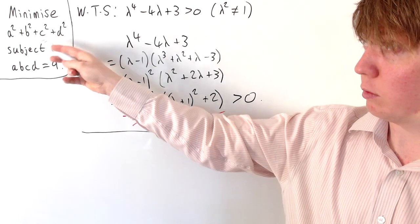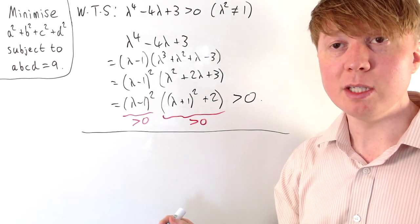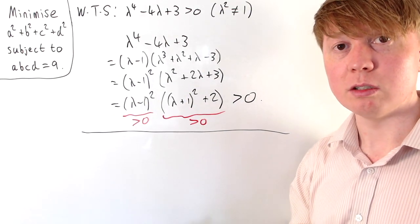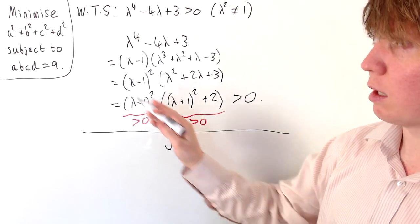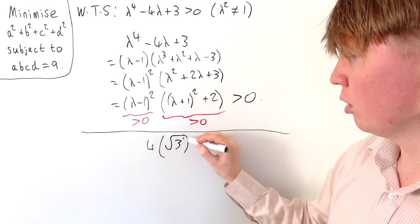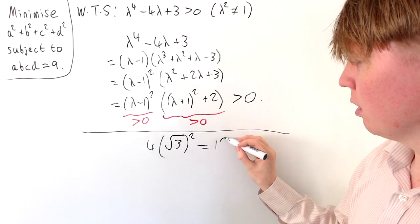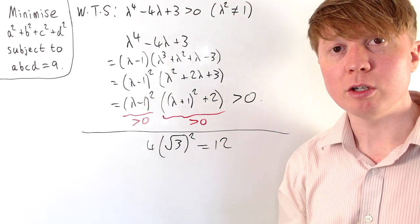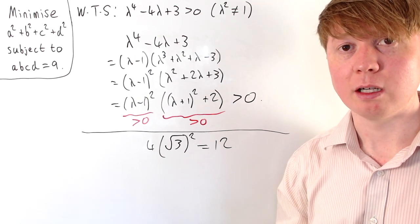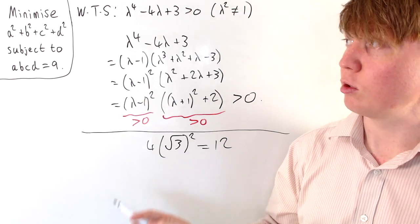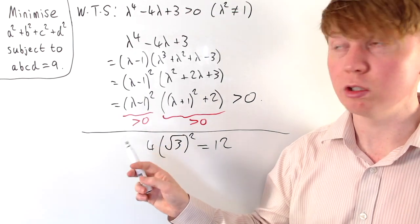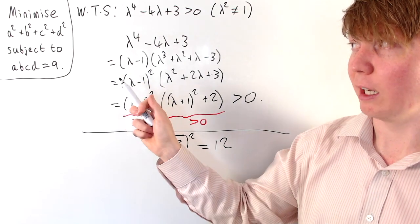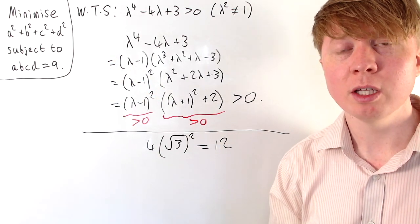To solve the original problem, we need a = b = c = d such that abcd = 9, so each value equals root 3. The minimum sum of squares is 4 times (root 3)² = 4 times 3 = 12. You can also achieve this with negatives: pairs of negative root 3, or all four equal to negative root 3, still give a product of 9 and a sum of squares of 12.